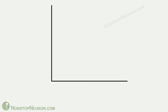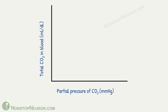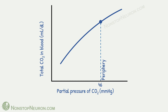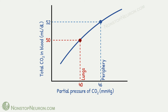Now let's see the Haldane effect in the carbon dioxide dissociation curve. Here, the x-axis shows partial pressure of carbon dioxide and the y-axis shows total content of carbon dioxide in blood. This is the carbon dioxide dissociation curve. At peripheral sites, partial pressure of carbon dioxide is about 46 mmHg, corresponding to a point where carbon dioxide content of blood is about 52 ml per deciliter. At lungs, partial pressure of carbon dioxide is about 40 mmHg, corresponding to a point where carbon dioxide content is about 50 ml per deciliter.